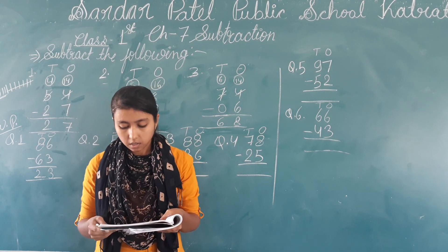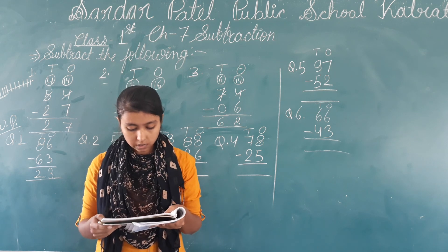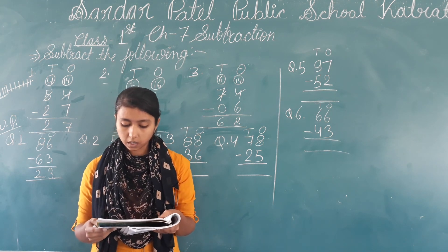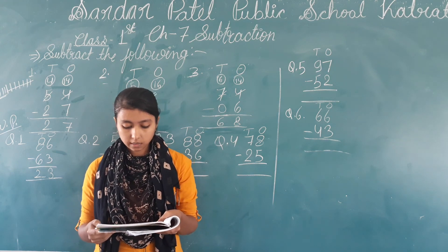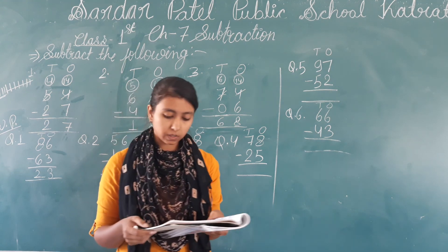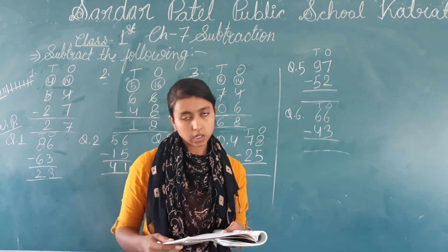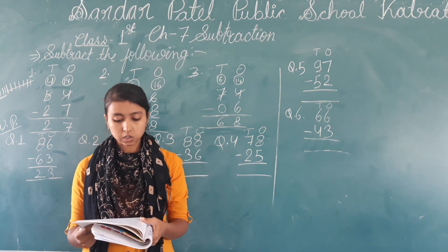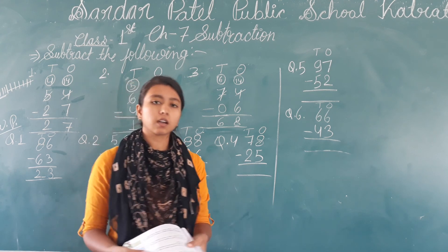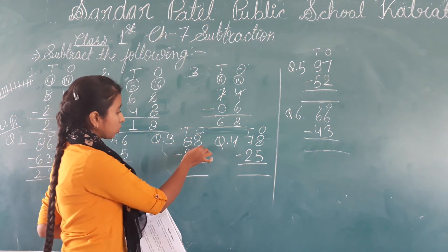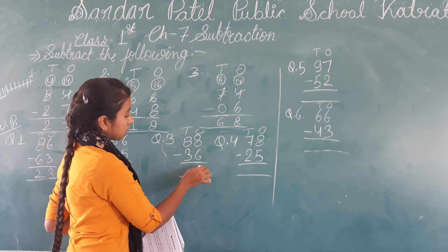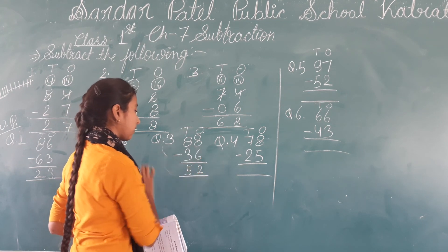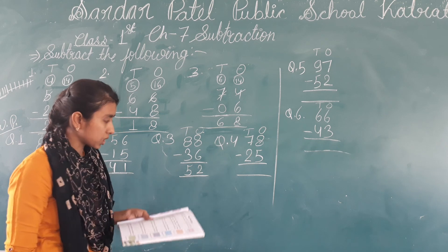The third question: there are 88 students in a class. If the number of girls is 36, find the number of boys. Total students are 88 and the number of girls is 36. So we minus 88 minus 36. 8 minus 6 is 2, and 8 minus 3 is 5. So there are 52 boys in the class.